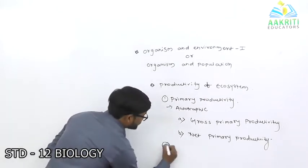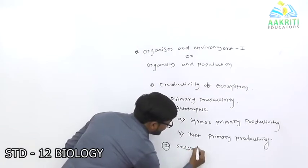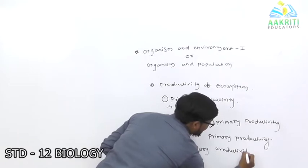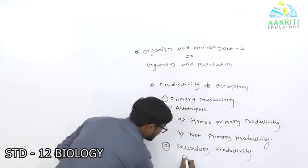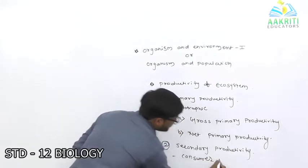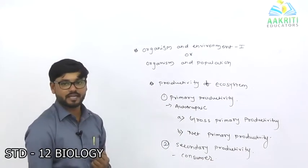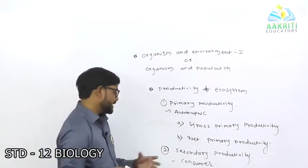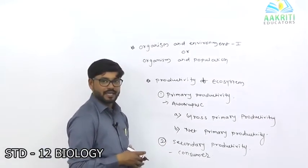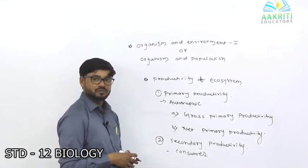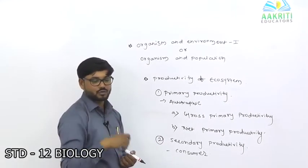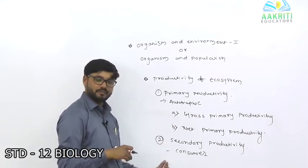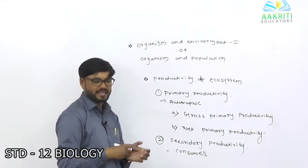Second is secondary productivity — this involves consumers. According to habitat, consumers consume the primary producers. After consuming, conversion into dry matter and fecal matter takes place. This is called secondary productivity — the productivity resulting from the use by consumers.